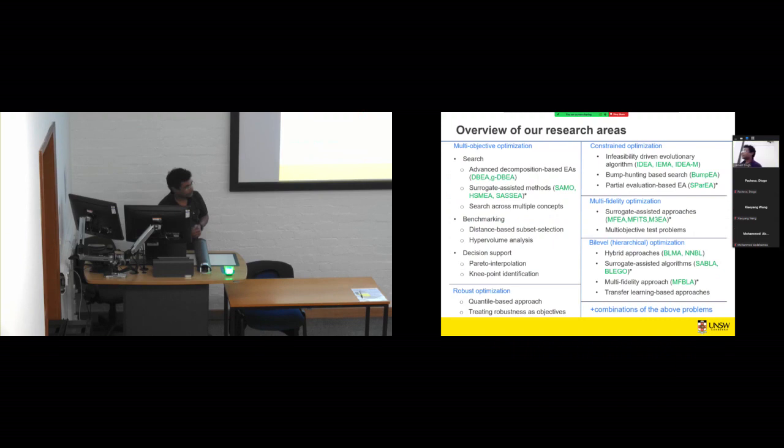So as I said, we work in a range of topics. So I just wanted to give a very high level view of what type of problems we work on. A large part of our work is dedicated to multi-objective optimization, which is basically searching for optimal solutions when you have more than one conflicting criteria, which happens often in real life. So we have worked on search methods for such problems. And also we look into how can we benchmark them in a more reliable manner, as well as the decision support.